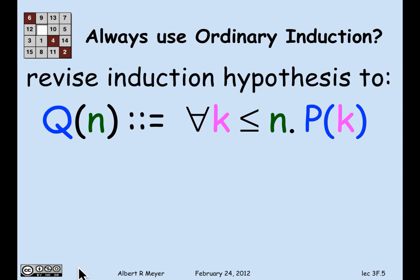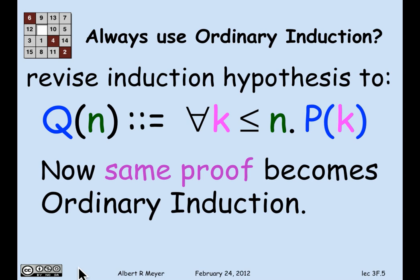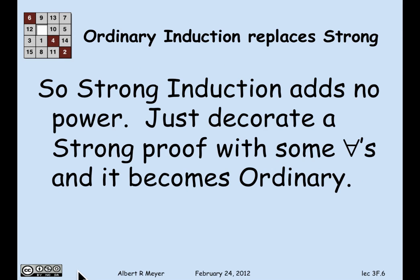If you think about it for a moment, just revising the induction hypothesis to include that universal quantifier — for all k less than or equal to n — means that strong induction on P(k) becomes an ordinary induction on Q(n). With a trivial change, decorating occurrences of formulas with for-all's, we have converted a strong induction into an ordinary induction. So strong induction adds no power beyond ordinary induction — it just lets you omit universal quantifiers that would otherwise need to be made explicit.